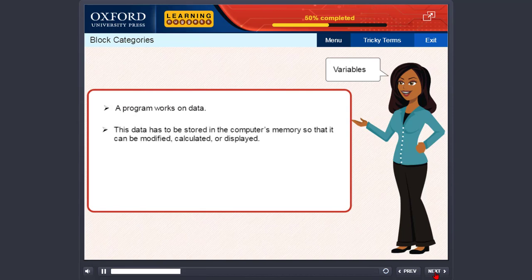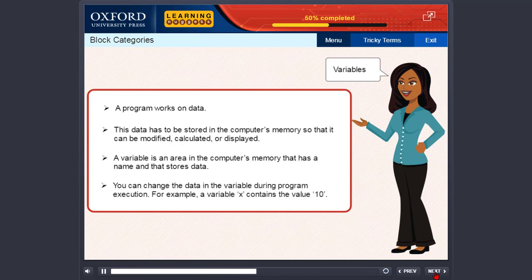This data has to be stored in the computer's memory so that it can be modified, calculated, or displayed. A variable is an area in the computer's memory that has a name and that stores data. You can change the data in the variable during program execution.